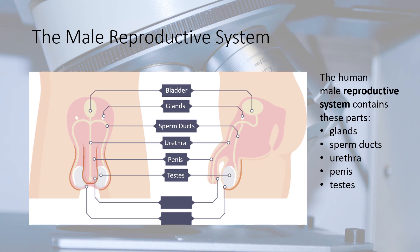The two testes (one of them is called a testis) are contained in a bag of skin called the scrotum. The testes have two functions: firstly, to produce millions of male gametes — sex cells — called sperm; and secondly, to make male sex hormones, which affect the way a man's body develops. The foreskin is the skin that covers the end of a man's penis.